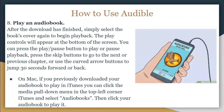After the download has finished, select the book's cover again to begin playback. The play controls will appear at the bottom of the screen. You can press the Play/Pause button to play or pause, press the Skip buttons to go to the next or previous chapter, or use the curved arrow buttons to jump 30 seconds forward or back. On Mac, if you downloaded to iTunes, click the media pull-down menu, select iTunes, then Audiobooks, and click your audiobook to play it.